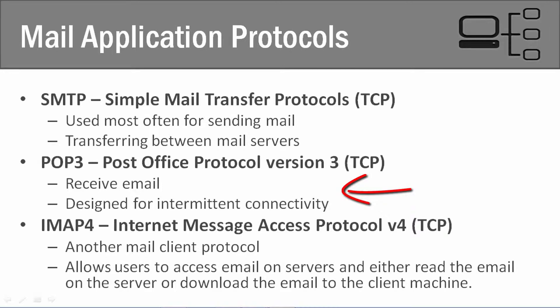POP3 is designed for intermittent connectivity, meaning it only queries and sends a request to the mail server whenever you ask it to. For example, if you have Outlook set to check for new mail every 5 or 10 minutes, it connects on a regular basis to download those new emails. So really, if you want to connect to an email server and send and receive emails, all you need is SMTP and POP3.